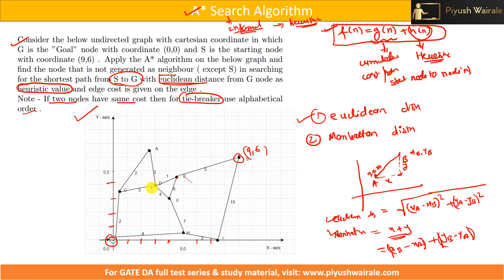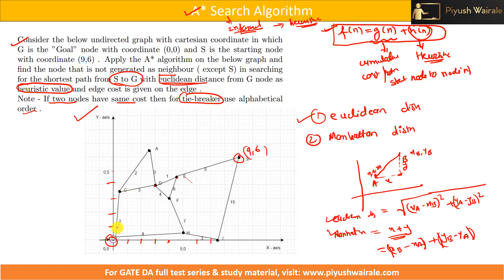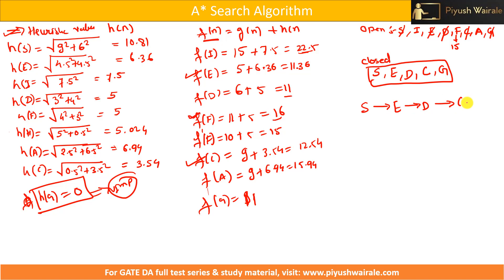f(G) = g(G) + h(G) = (5+1+3+2) + 0 = 11. Comparing with remaining open list nodes, f(G) = 11 is the lowest. So we go to G — the goal is found. The path is s → e → d → c → g with a total cost of 11.